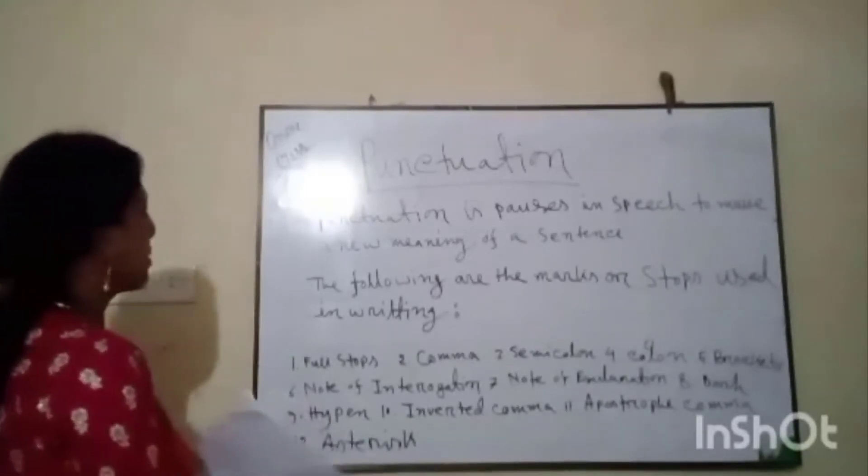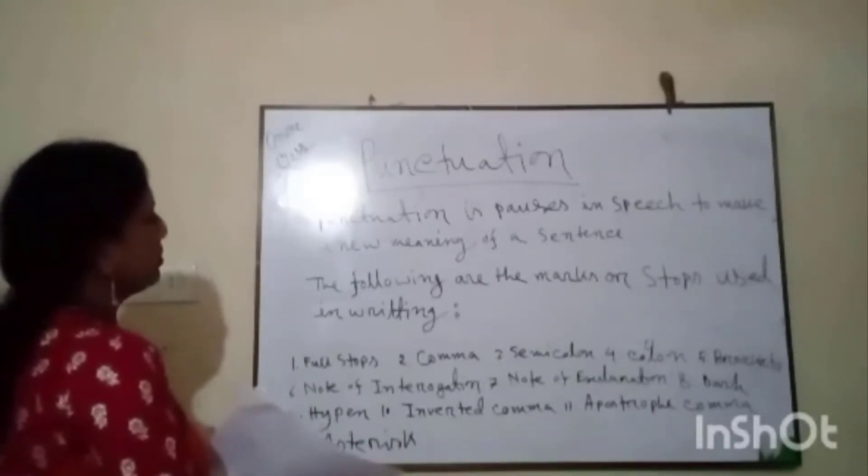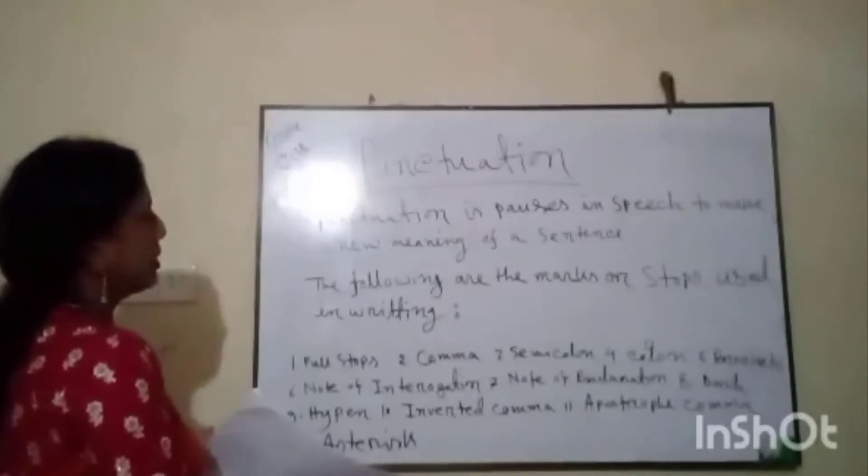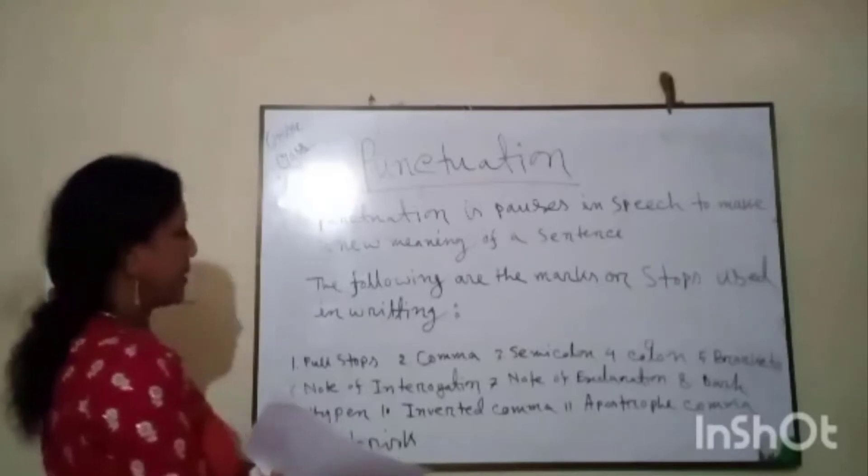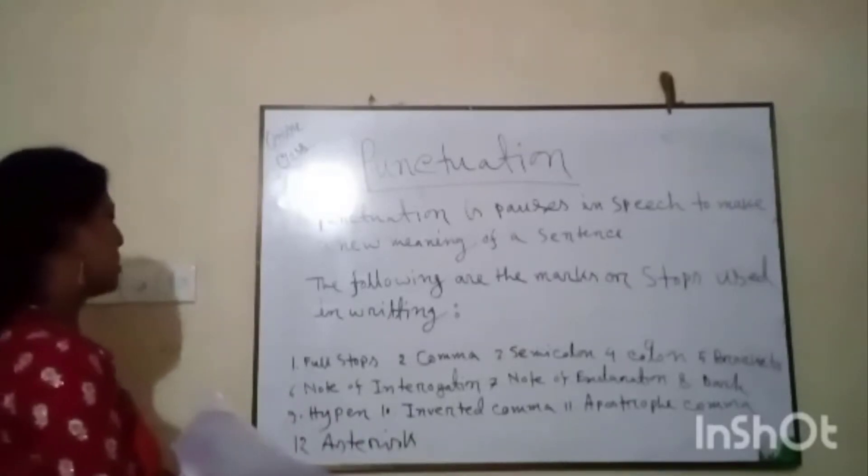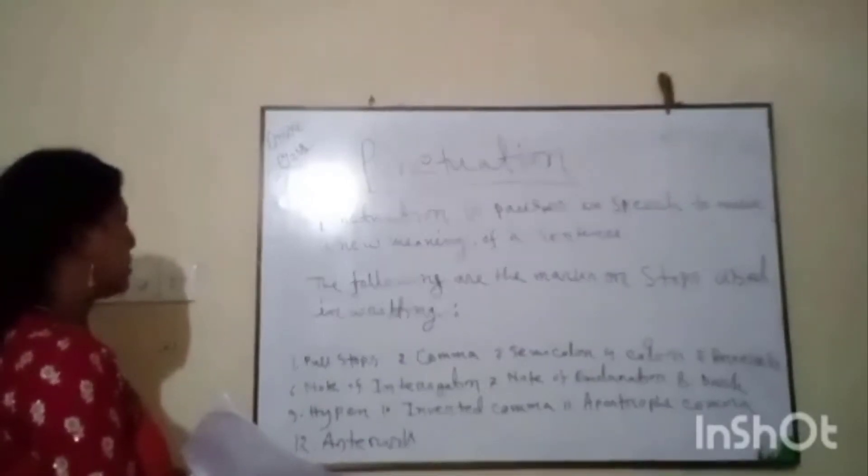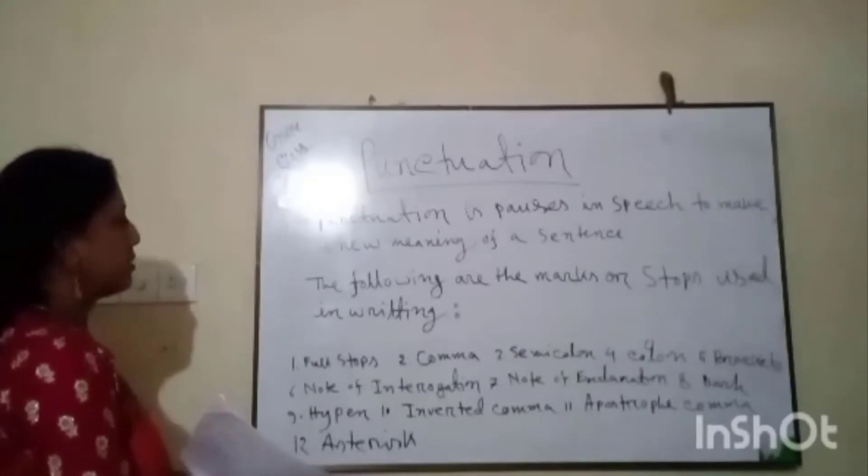Number one: full stop. Number two: comma. Number three: semicolon. Number four: colon. Number five: brackets. Number six: note of interrogation. Number seven: note of exclamation.